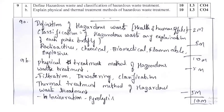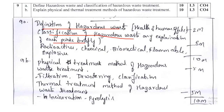Question number 9a: Define hazardous waste and classification of hazardous waste treatment. What are the different types of hazardous waste available? Give a definition in one or two sentences, then explain the classification — different types such as K list, L list, and other varieties — along with their characteristics. Then explain hazardous waste treatment, including different physical and chemical treatments.